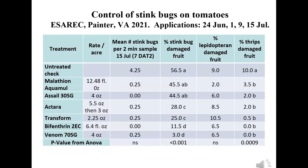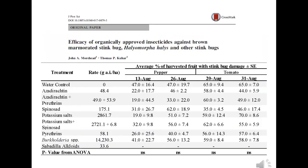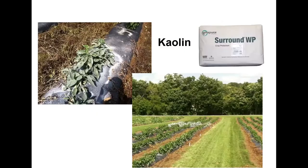A trial just last year confirmed this: with over 50% stink bug damage in the untreated control, bifenthrin and Venom — your pyrethroid and neonicotinoid — were the best options. For organic growers: all the things most might use — oils, salts, azadirachtins, pyrethrins, spinosyns — do not work. I've tested them over and over again. They will not control stink bugs in the field. You'd be wasting your money.